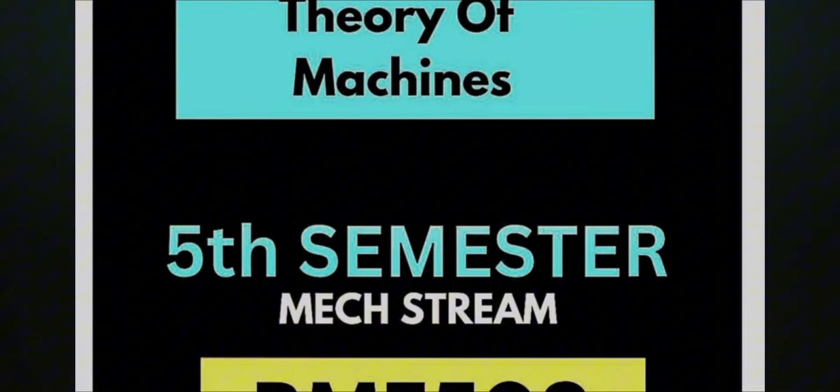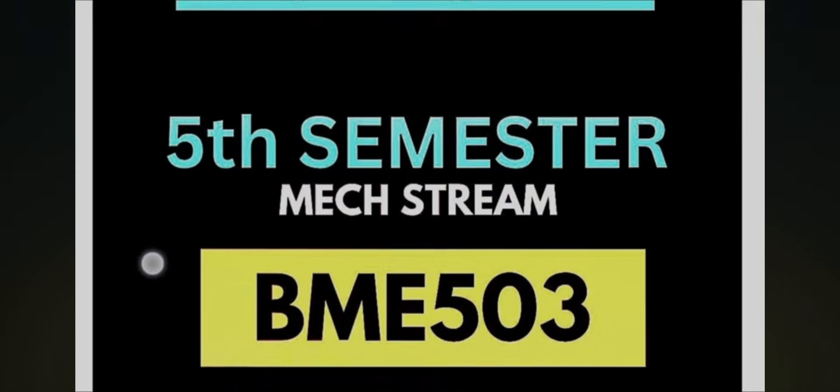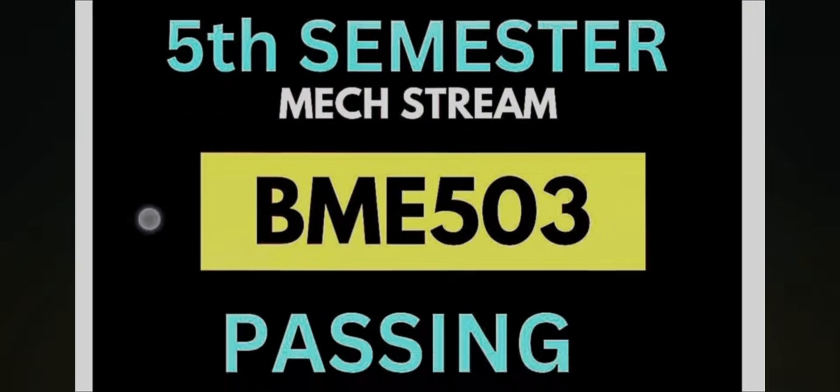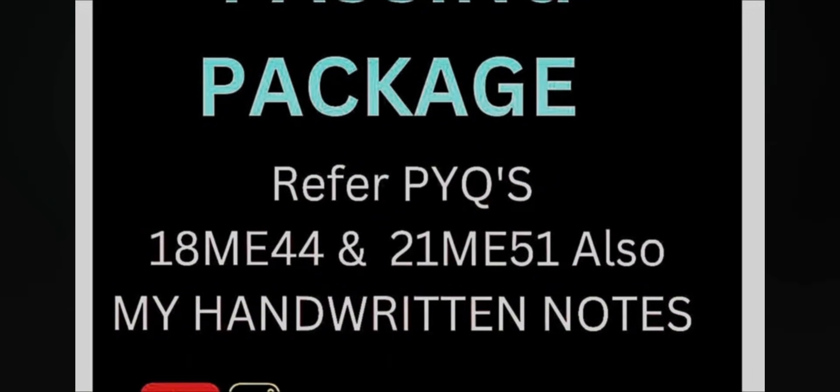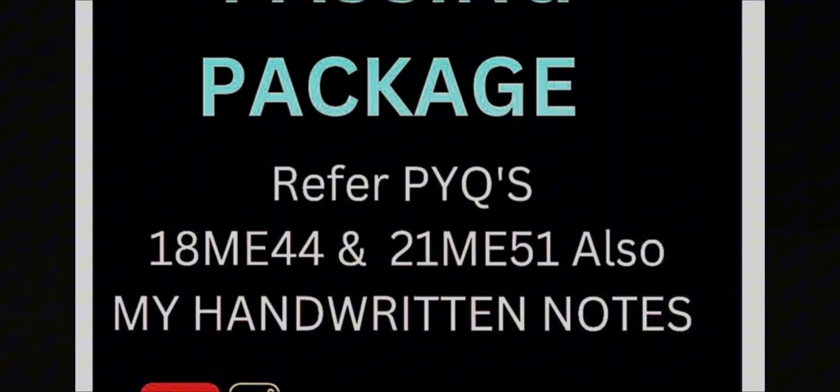This is the subject code over here, BME 503 Theory of Machines is the subject name. For the numerical part you have to refer the papers 18ME44, that's Kinematics of Machines, and 21ME51, it is the TOM subject of 21 scheme.